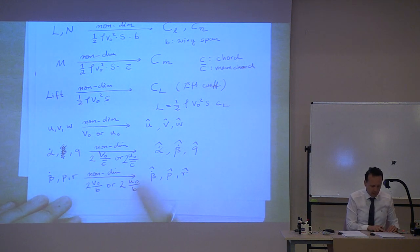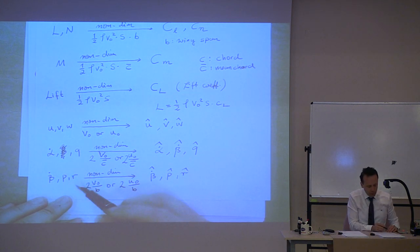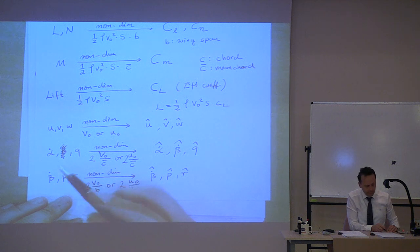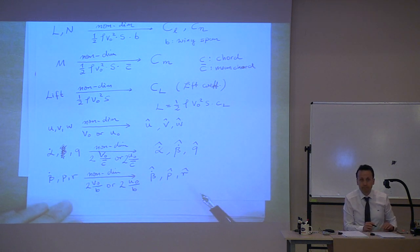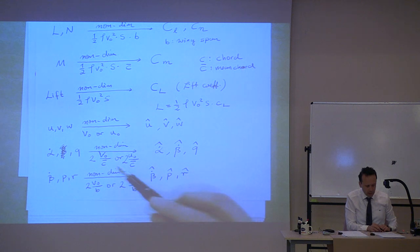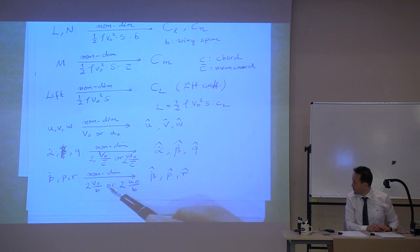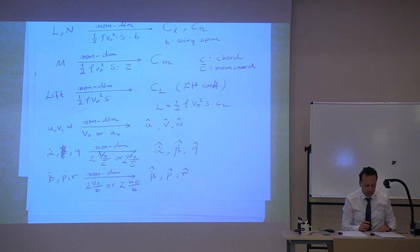Beta dot is not here, obviously. For the longitudinal it's alpha dot and Q, and for the lateral it's beta dot, P and R. And this is chord and this is span.